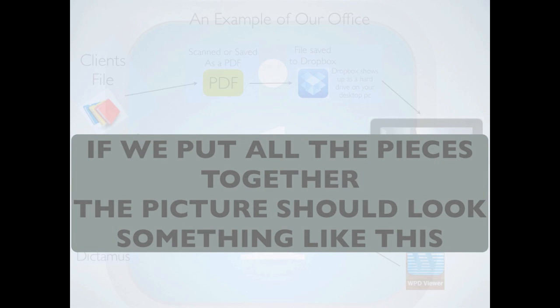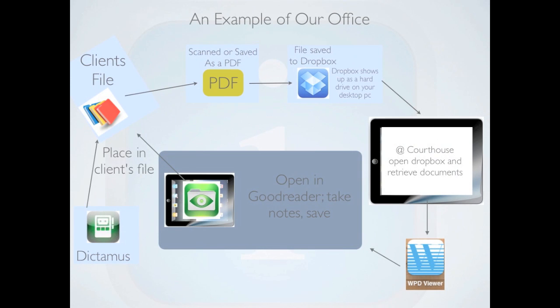We want to slow down and make sure you've got this — the main point here is that this is the workflow we suggest. If you want to substitute other apps, you can; this is what works for us. We record on Dictimus, then have our paralegals type that up and place it in our files. We scan or publish those to PDFs, save them in Dropbox by client last names and matter types, then open them at the courthouse. If it's a WordPerfect file, we can still open it, view it in GoodReader, take notes, and put it back.